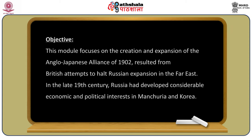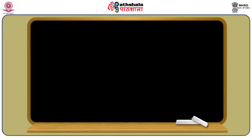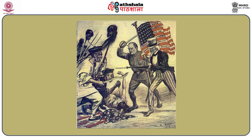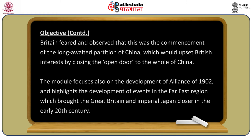The alliance resulted from British attempts to halt Russian expansion in the Far East. In the late 19th century, Russia had developed considerable economic and political interests in Manchuria and Korea. During the Boxer Crisis of 1900, the European powers — Britain, France, Germany, and Russia — as well as the United States and Japan sent their forces into China. Russia used the turbulence as a ploy to send a large number of troops into Manchuria, acting completely independently of other powers.